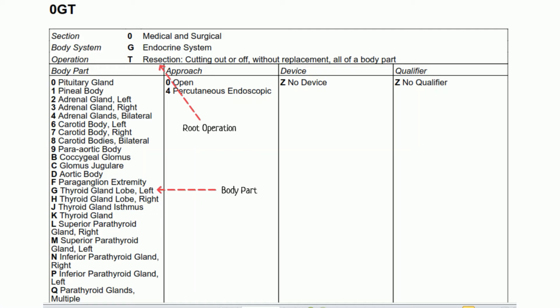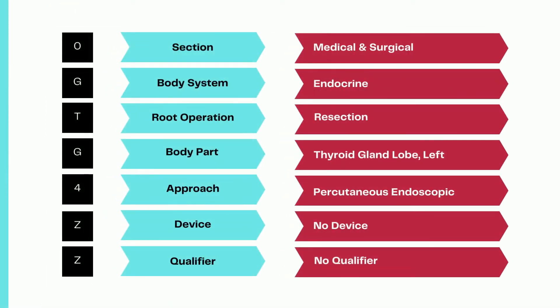The approach is percutaneous endoscopic since the procedure is done through a scope along with instrumentation. There is no device for the sixth character — remember, device in PCS is something left inside after the procedure is complete, not something used to complete a procedure. The seventh character qualifier is none. So the code for the thyroid lobe resection procedure would be 0GTG4ZZ.